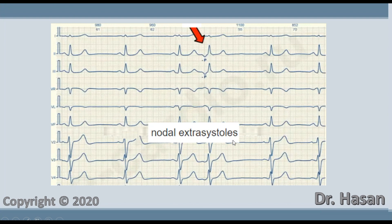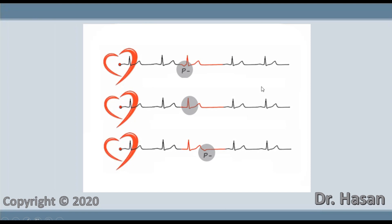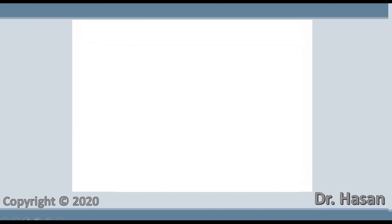In an ECG example of a nodal extrasystole from the upper part of the AV node, notice how the P wave is negative and the PQ interval is shortened. Let's summarize the criteria for AV nodal extrasystole: the RR distance before the extrasystole is less than between normal contractions; the P wave is either negative, absent, or the PQ segment is shortened; and the QRS complex is not changed at all.